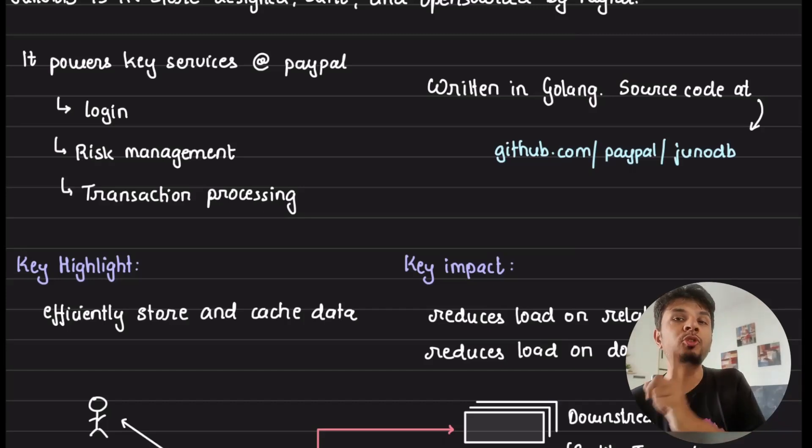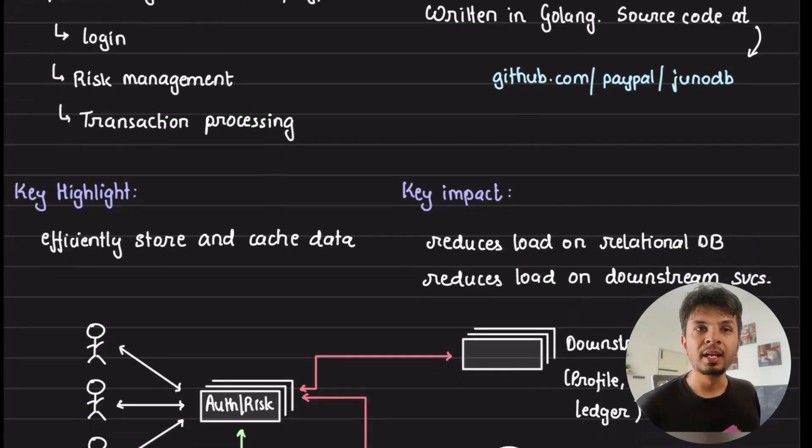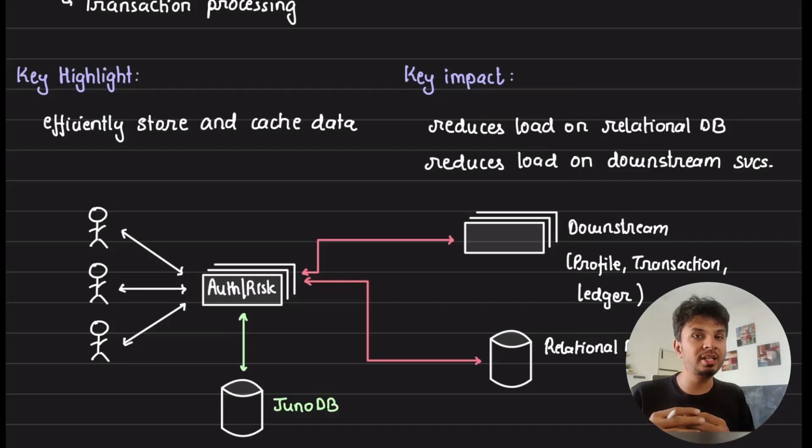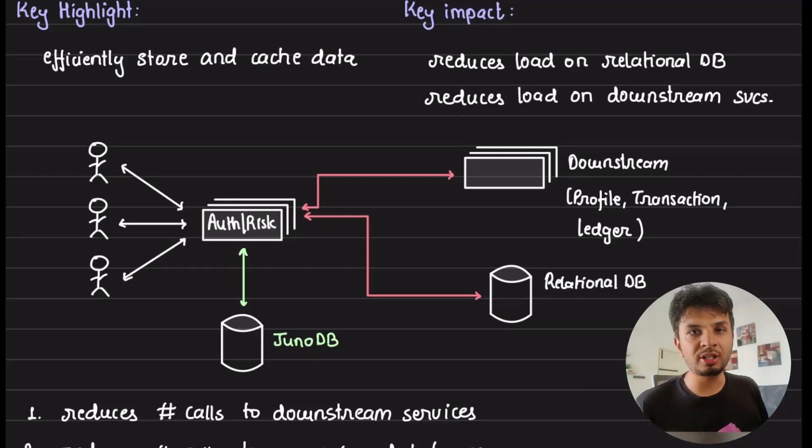JunoDB powers some of the key services at PayPal. It does not mean it's a source of truth for them. It is used in some of the core backend services at PayPal like authentication, login, risk management, and transaction processing. The key motive through which this JunoDB was built is that they wanted a very efficient way to store and cache the data. The best part being that JunoDB is not entirely in memory, but it can still cache data for you. It has persistent storage as well.